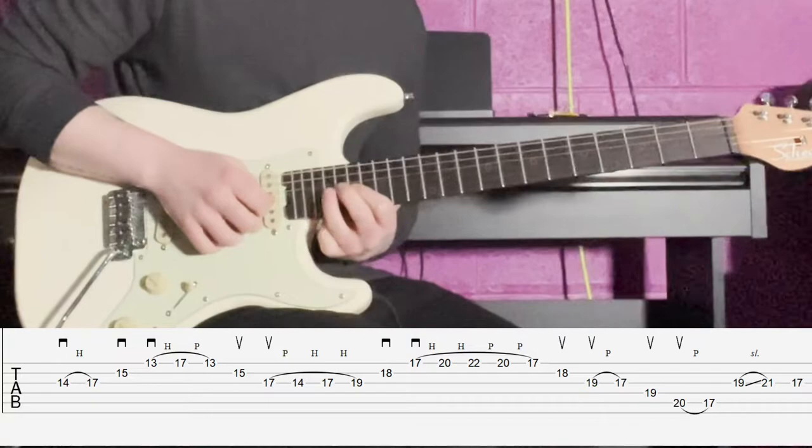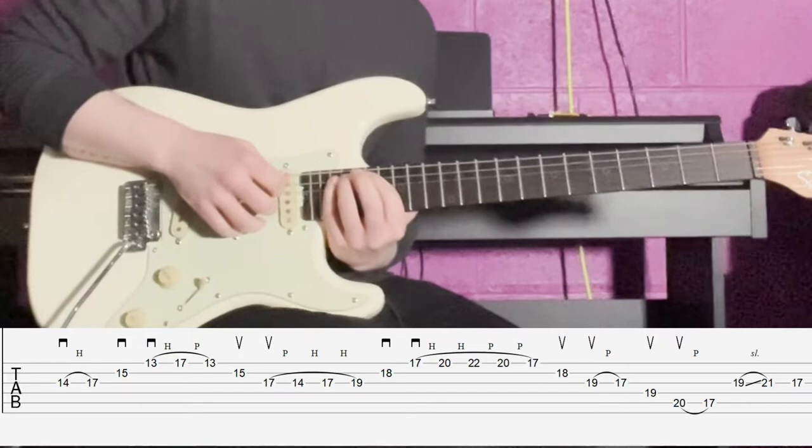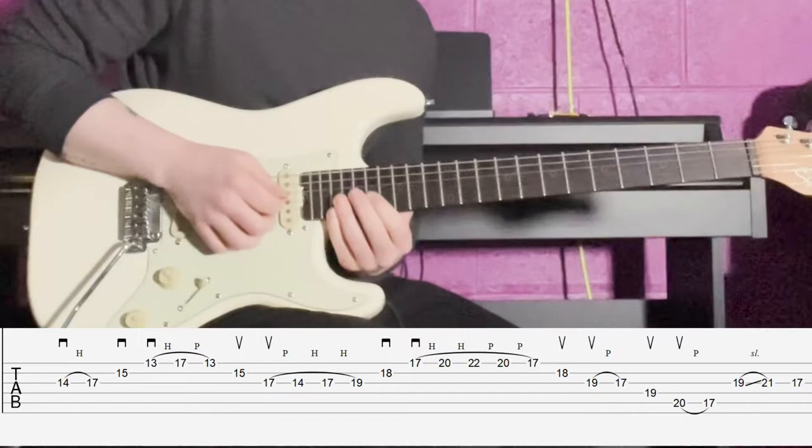So that's our root pull off to your minor seventh. Then we're going to play our perfect fifth with an up. Then we're going to play a minor third moving up, pull off to our root.